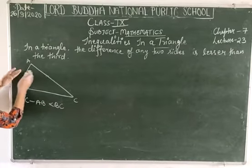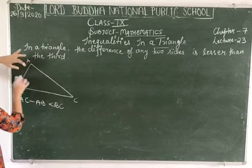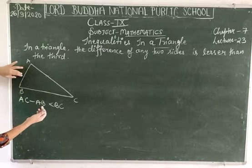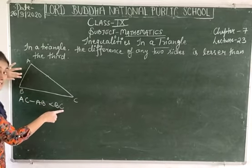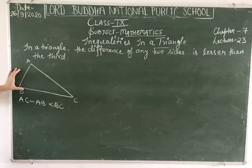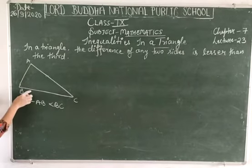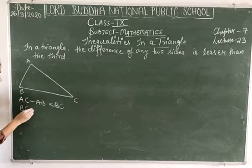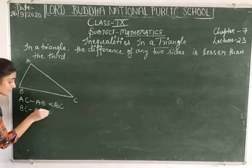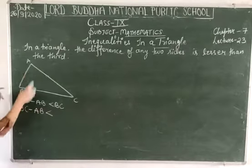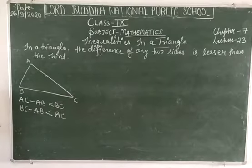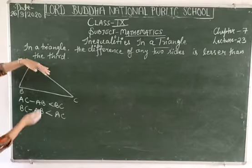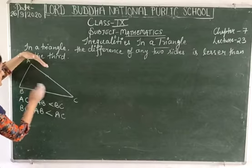AC is greater than AB, so AC minus AB is lesser than BC. The second condition: if I consider BC and AB, then BC minus AB is lesser than the third side, which is AC. Similarly, the third condition involves BC and AC: since AC is greater than BC, we get AC minus BC is lesser than AB.